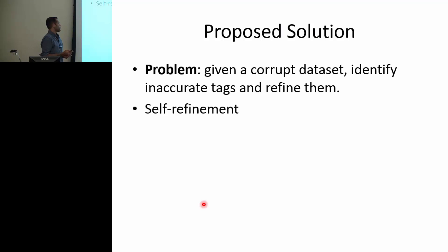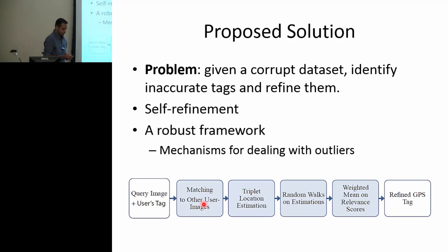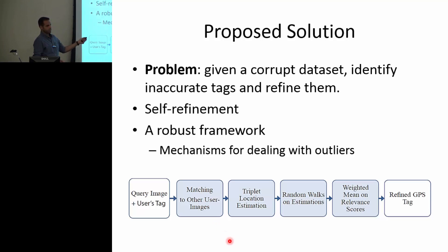We do self-refinement — we don't need any other dataset; we use the dataset itself to solve this problem. We also have a robust framework with an internal mechanism for dealing with outliers. Here's the block diagram. It has three main components: image matching, triplet estimation, and random walks.